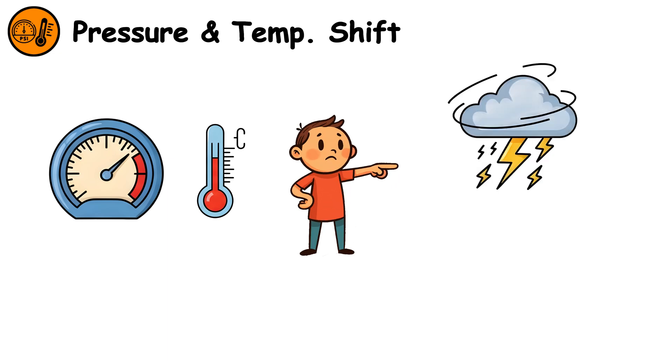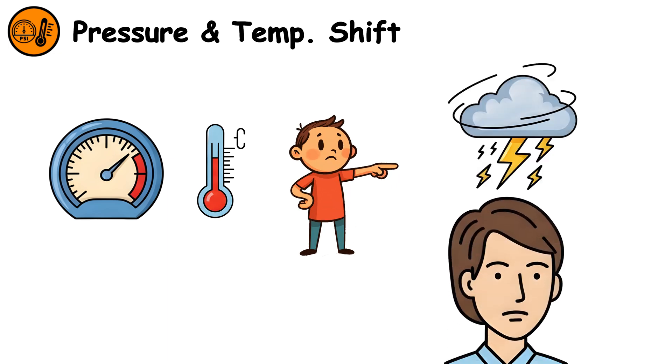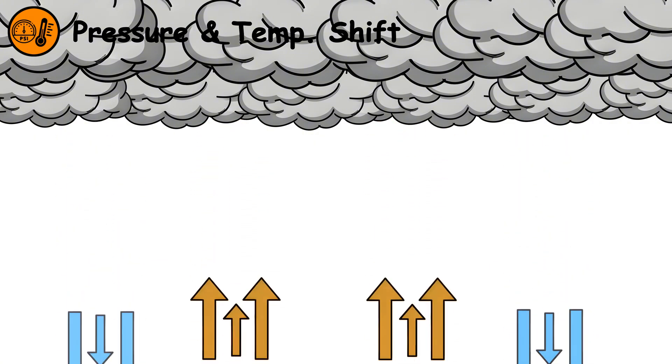When pressure and temperature change quickly together, it signals that the storm's core and its electrical activity are overhead. This shift often occurs just before the first lightning flash.